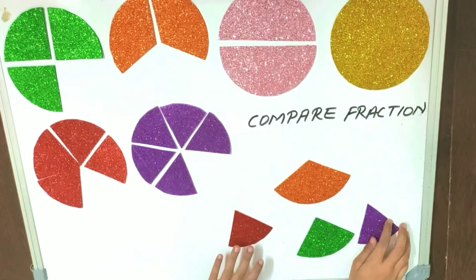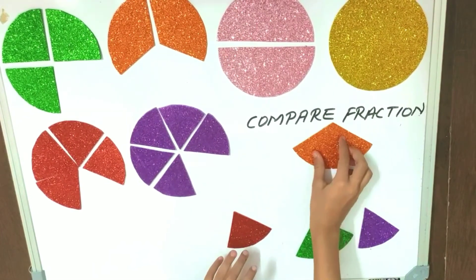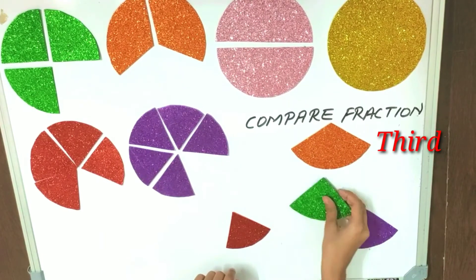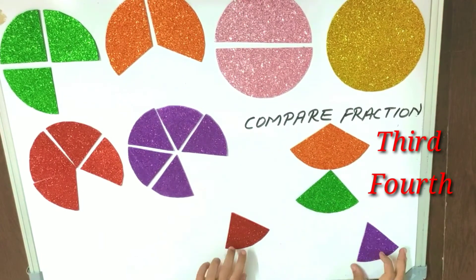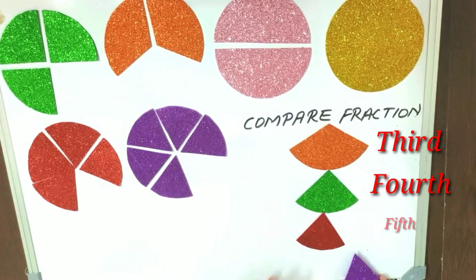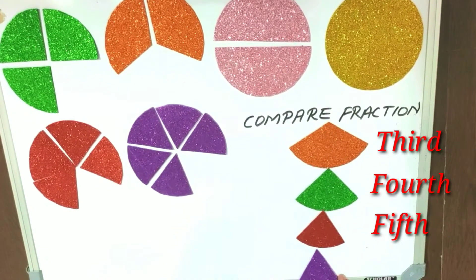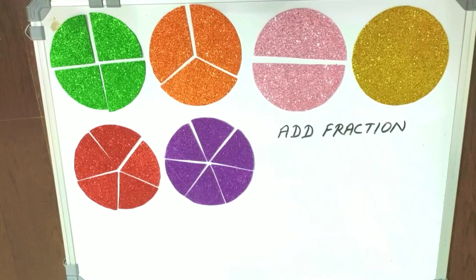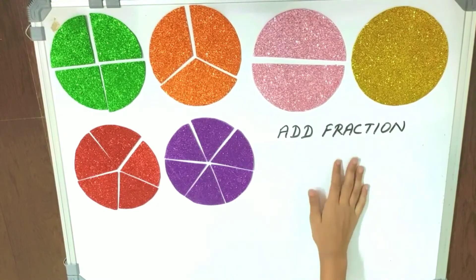We can easily say that the third is the greatest, then the fourth, then the fifth, and the sixth is the smallest. Now we add fractions.